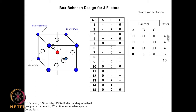This shorthand notation corresponds to the standard form we are used to. When we write A ±, B ±, C = 0, that represents the first 4 experiments where A and B go both plus and minus while C stays at 0. The 5th experiment is (0,0,0) — the central point. We have 3 places where experiments are done at the central point, and this all adds up to 15 experiments.